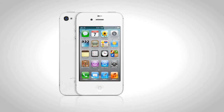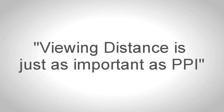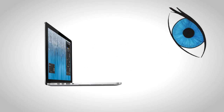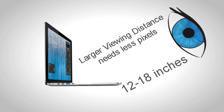If you guys remember those numbers which I told, you might then say that the iPhone has the best display with a pixel density of 326. Well, that's not quite right because viewing distance is just as important as the PPI itself. The larger the viewing distance, the fewer pixels we need. So basically, when we are using a MacBook Pro, we will be using it from a distance of about 12 to 24 inches, and with that sort of viewing distance we need fewer pixels and we would still not be able to distinguish between pixels.